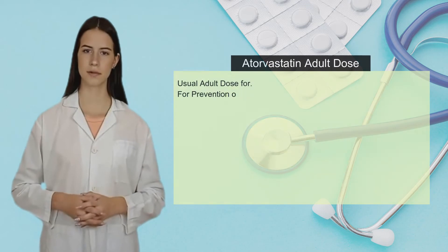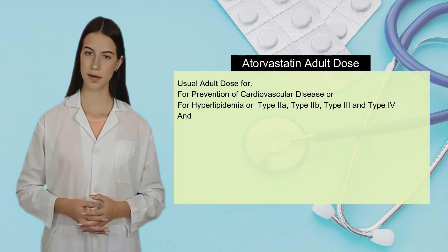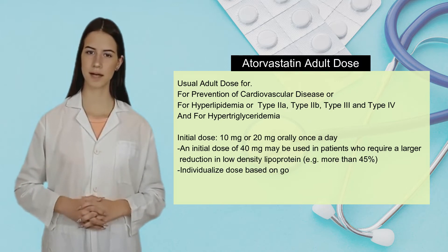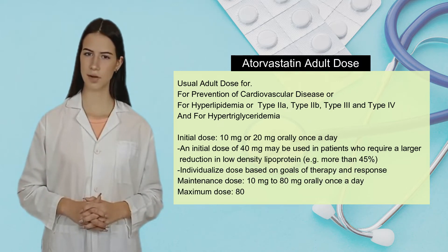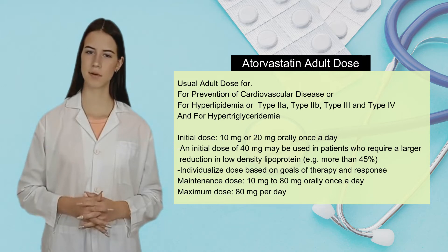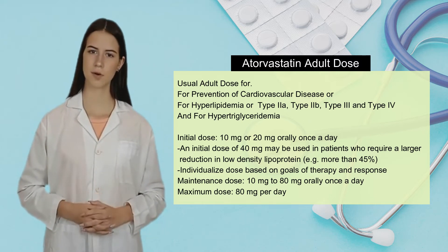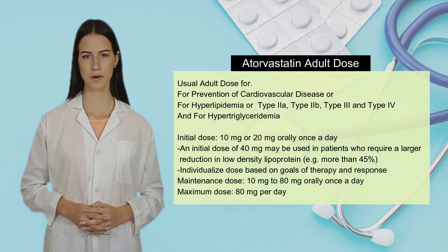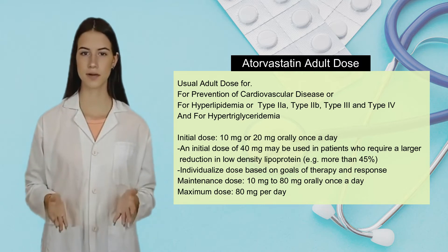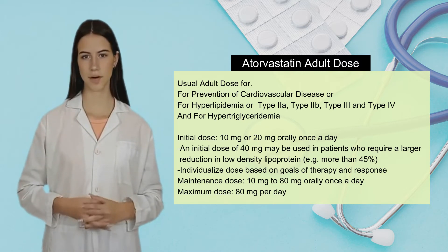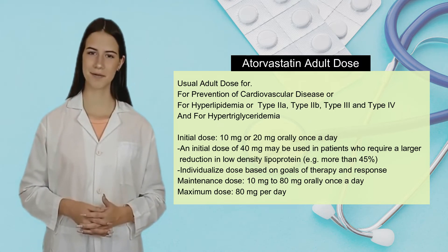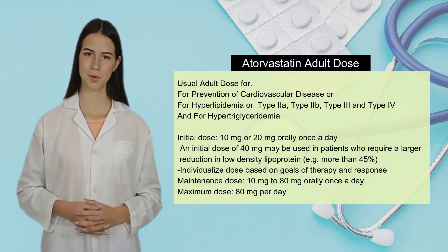Usual adult dose for prevention of cardiovascular disease, for hyperlipidemia or type Ea, type Ib, type Roman-3, and type Roman-4, and for hypertriglyceridemia. Initial dose: 10 mg or 20 mg orally once a day. An initial dose of 40 mg may be used in patients who require a larger reduction in low-density lipoprotein, e.g., more than 45%. Individualized dose based on goals of therapy and response. Maintenance dose: 10 mg to 80 mg orally once a day.